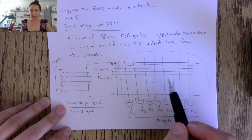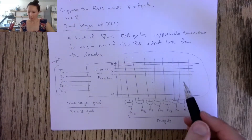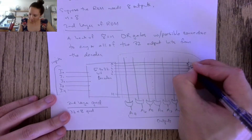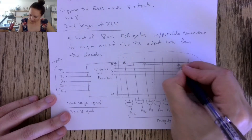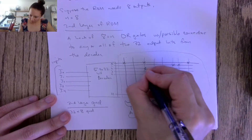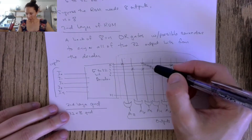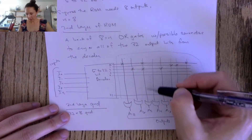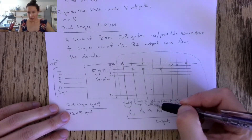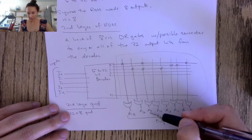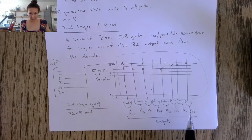Some of these grid points will have connections and some won't. The way we determine which connections get fused together is based on the function we're trying to implement. For example, certain lines will have a connection here and here — if both inputs along the A5 line are connected and one or both is high, then A5 output will be high. That's a general introduction to how we construct the ROM.